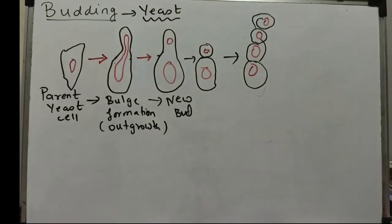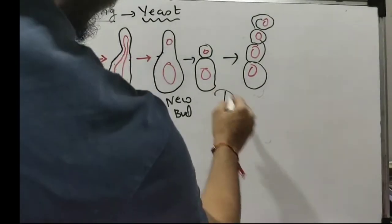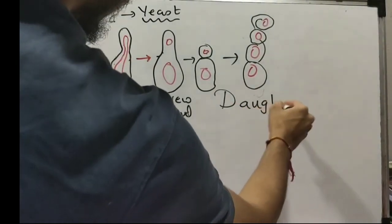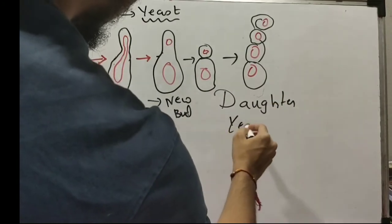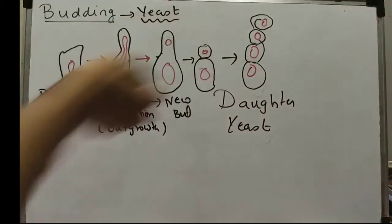This is daughter yeast. A new yeast is formed. Pehle maabab ke saath jude hote hain, then when maabab gets separated.